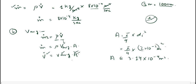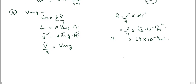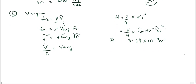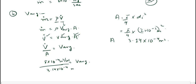Substituting into the formula, V-dot equals V-average times area, so V-average = V-dot divided by area = 8 × 10⁻⁴ meter cube per second divided by 3.14 × 10⁻⁴ meter square. The meter square cancels with meter cube to give meter per second.